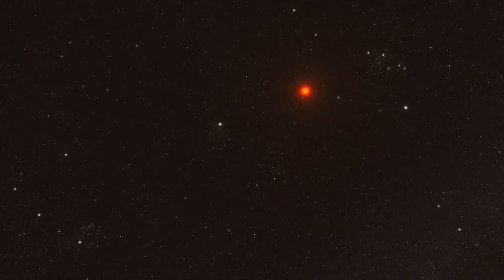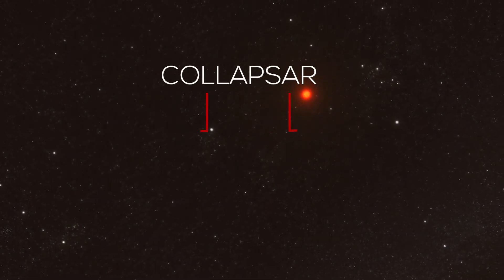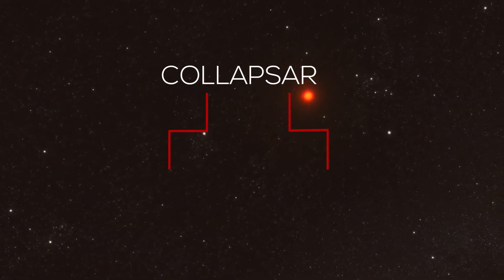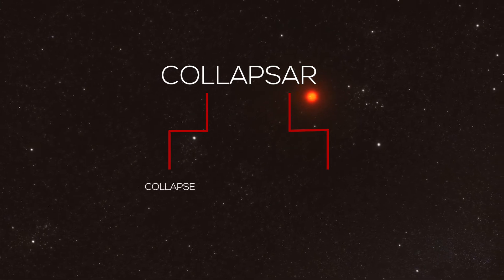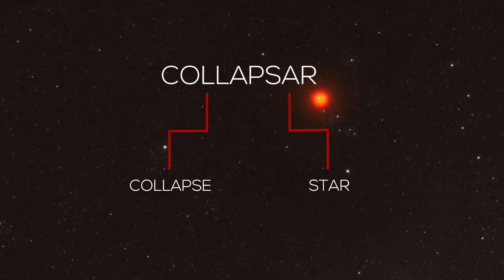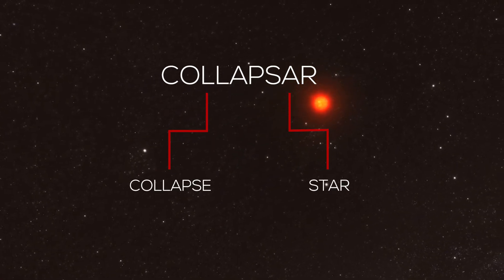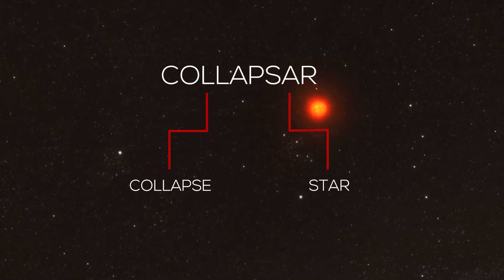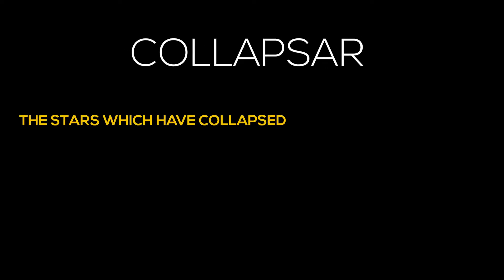The word Collapsars can be broken down to two simple words: collapse and star. So going by this simple method, we can define Collapsars as the stars which have collapsed under their own gravity.